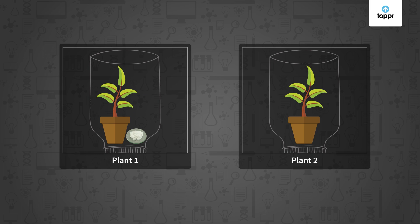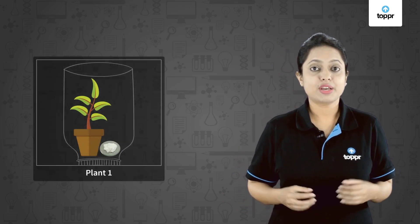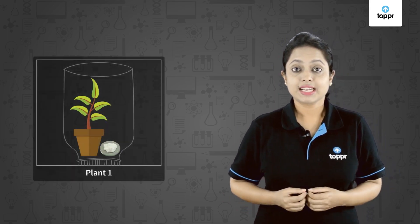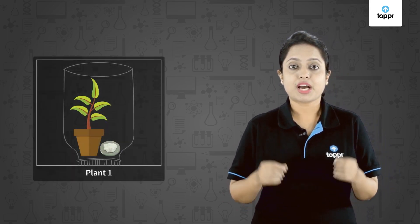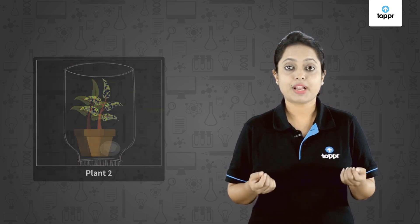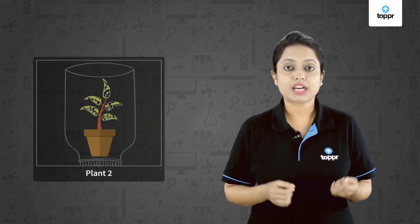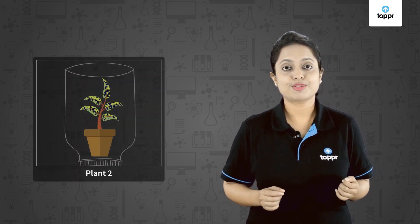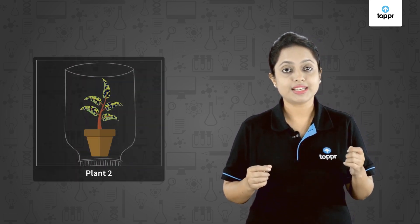After three hours, we'll test the presence of starch in the leaves of both plants. We can see that plant one does not contain starch, while plant two confirms the presence of starch in it.